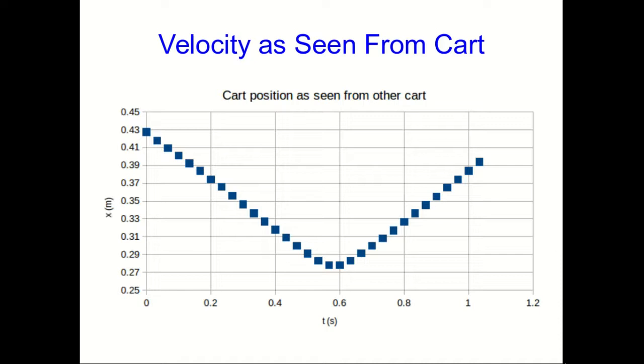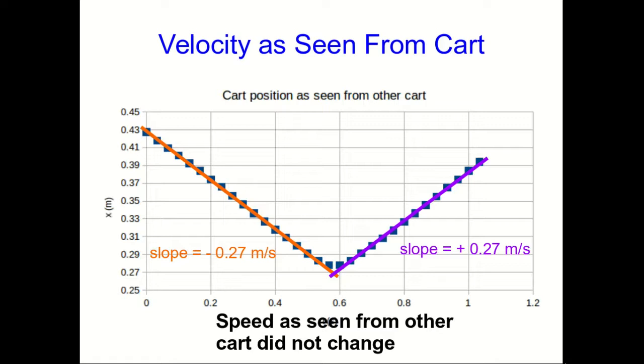I can plot up a position versus time graph for the one cart as you see it from the other cart, and it looks like this. The thing to notice is that we can pull some slopes off—there's the slope before the bounce and there's the slope after the bounce—and so these are x components of velocity, and their magnitudes then are the speed. Notice that the speed as seen from the other cart is the same before and after the collision. So this is very much like a very bouncy ball bouncing off the floor.